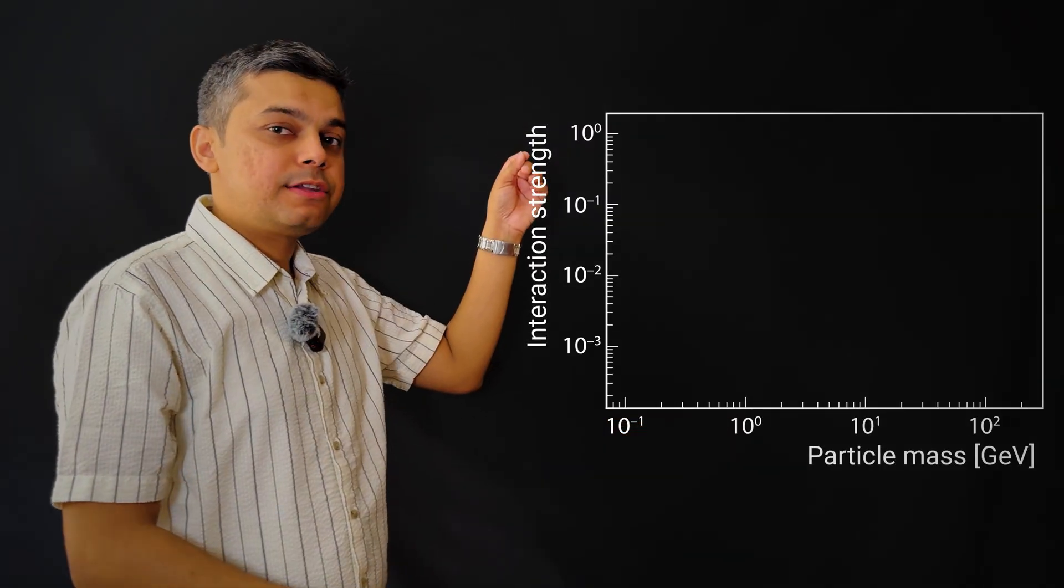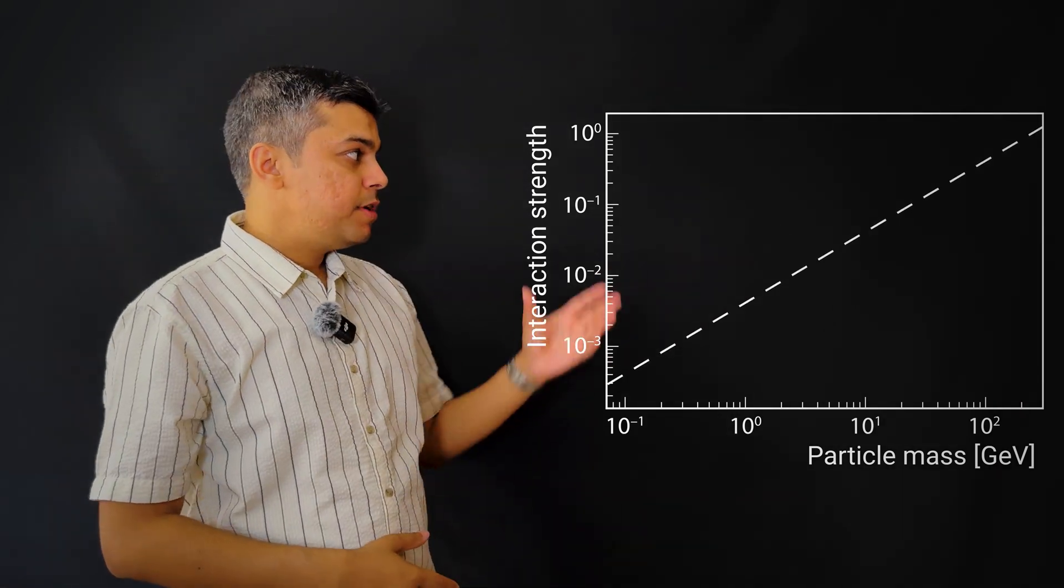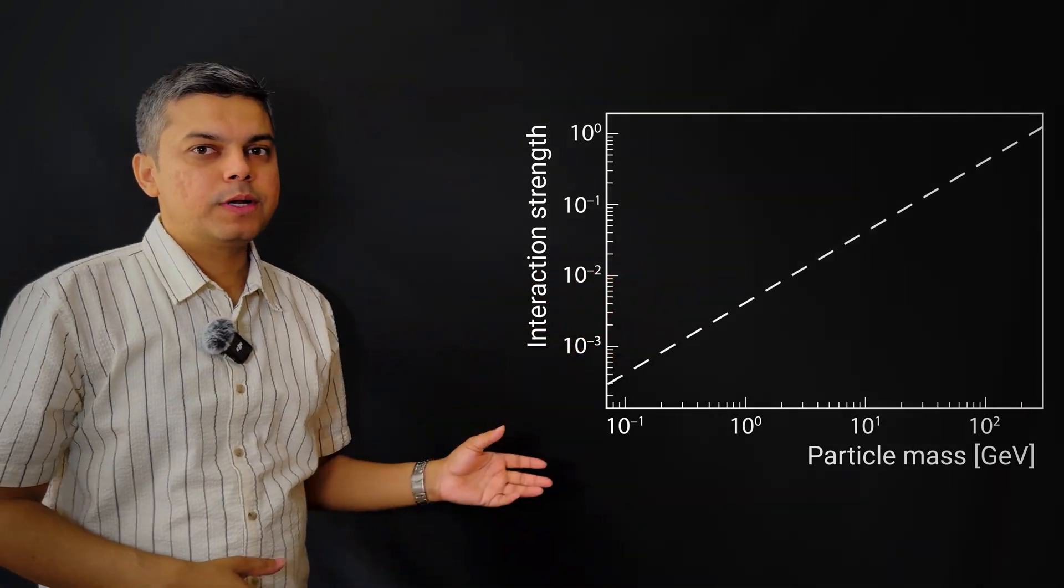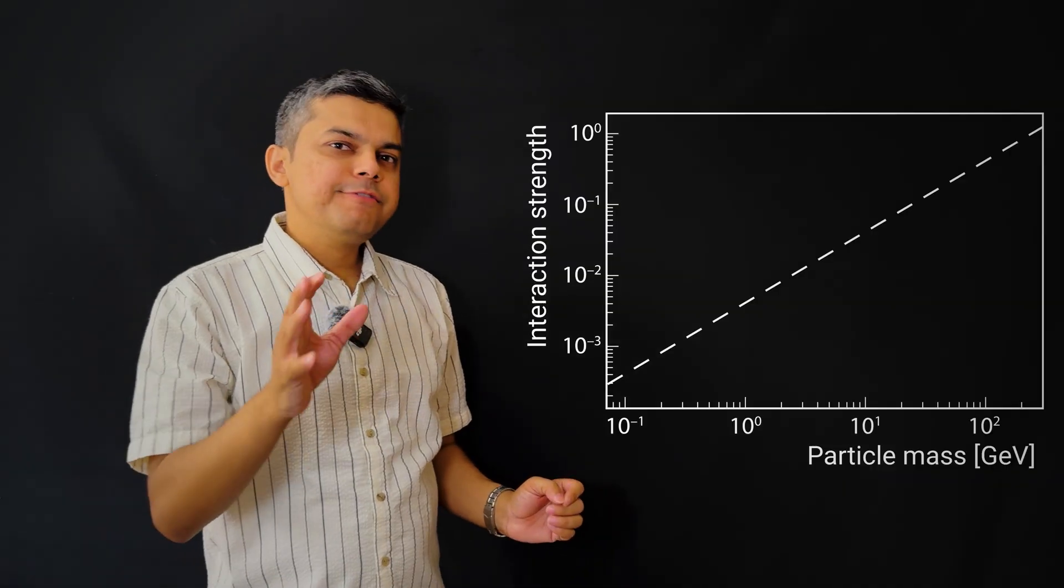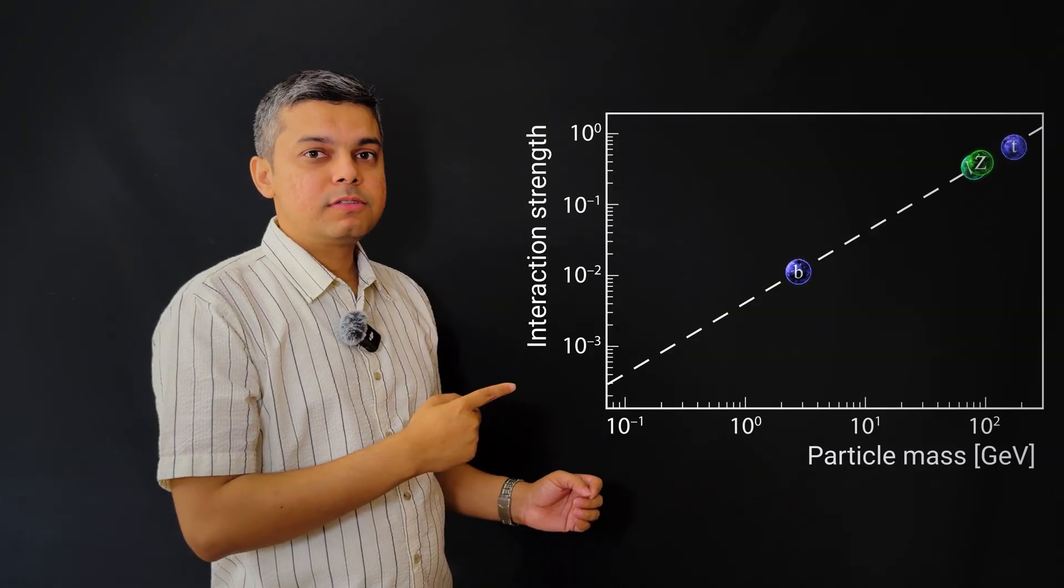A key to understanding the Higgs boson is how strongly it interacts with the other particles. Let's make a graph between masses of particles and how strongly they interact. Let's draw the theory prediction. Heavier particles should interact more strongly. We have confirmed this for the heavier particles like the top and bottom quarks and W and Z bosons.